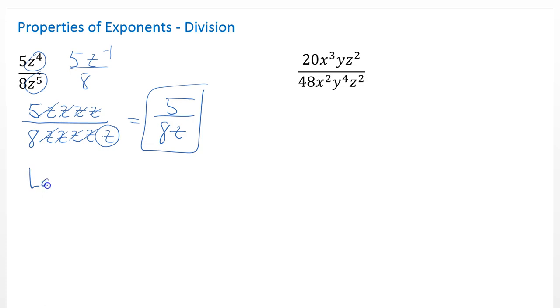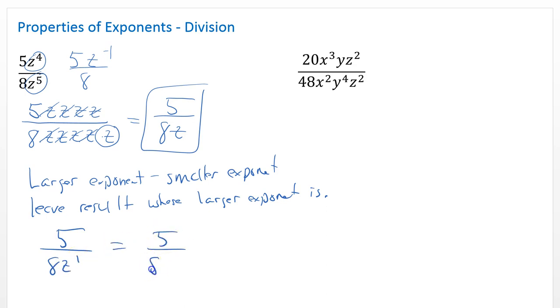But now, here's what I say. I always take the larger exponent, and then you subtract the smaller exponent, and you leave it where the larger exponent is. So leave the result where the larger exponent is. That's probably a better way to say that. So what I'm going to do is you've got the 5 and the 4. I'm going to do 5 minus 4, but since the 5 is larger, I'm going to leave that in the denominator. So then you have 5 over 8z to the 1st, and we know z to the 1st is just 5 over 8z.